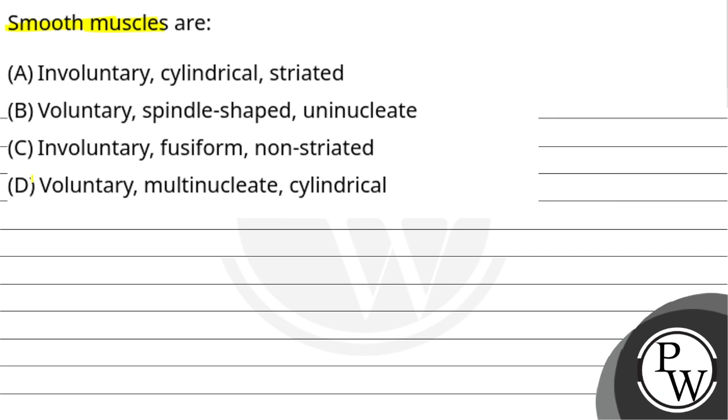And option C, involuntary, fusiform, non-striated, and option D, voluntary, multinucleate, and cylindrical. So firstly, see about the key concept of this question and here we are going to discuss about the smooth muscles. If we talk about the smooth muscles, then we will understand it from the structure.